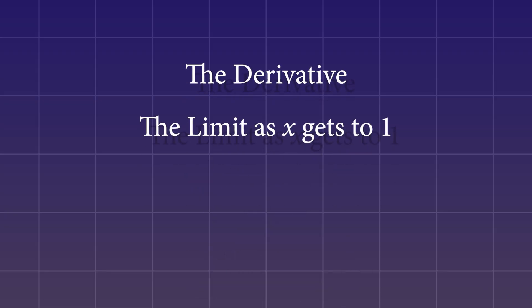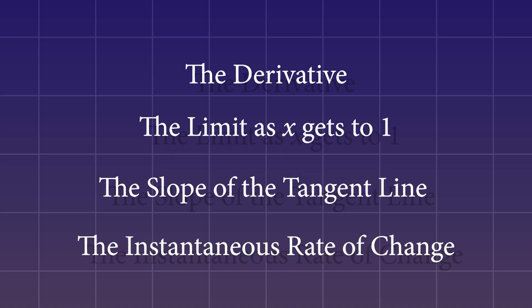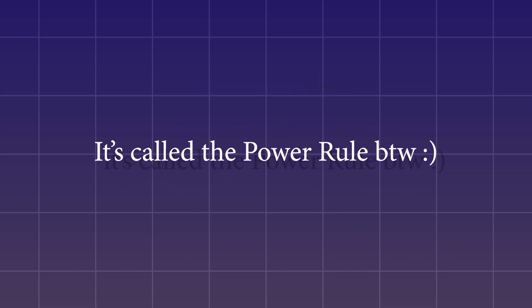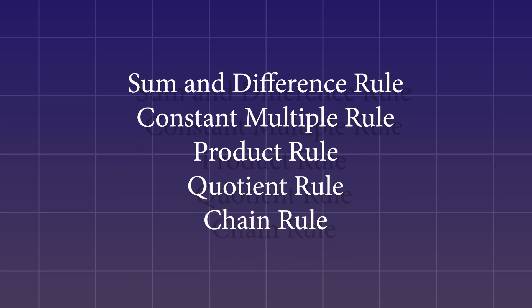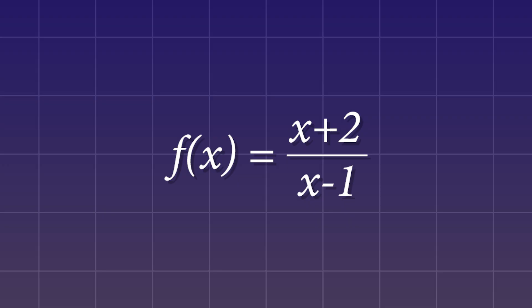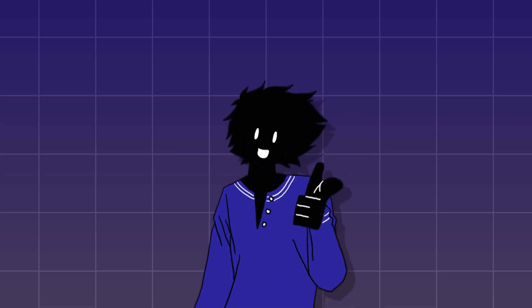The derivative, the limit as that gets to 1, the slope of the tangent line, instantaneous rate of change, it's all the same thing. This nifty trick will help you find the derivative of many functions, although it's not the only one. There are many other rules to do this, because sometimes functions will look like this, and you need other techniques to find the derivative. But what I just taught you should help you a lot.